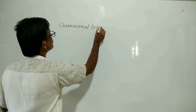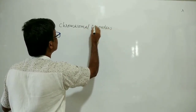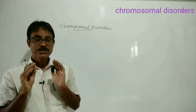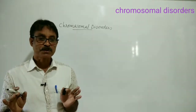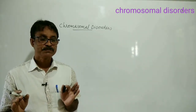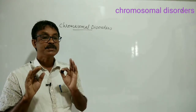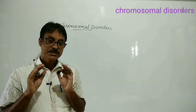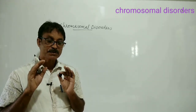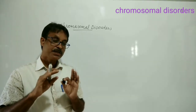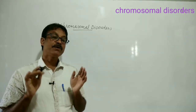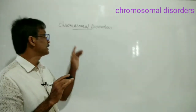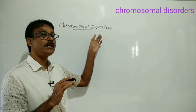Chromosomal disorders are the genetic disorders due to a change in the number of chromosomes or due to a change in the arrangement of chromosomes. A change in the number or arrangement of one or two chromosomes leads to a disorder called chromosomal disorder.